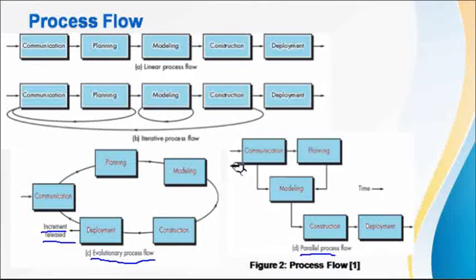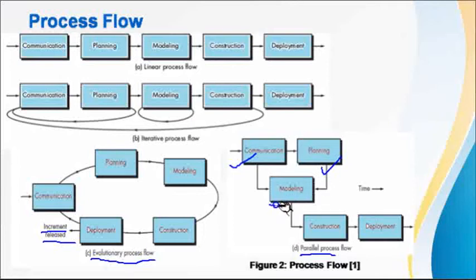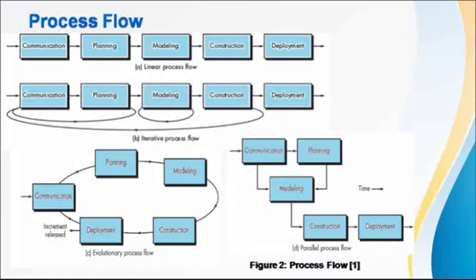The last one is parallel process flow. Here, teams are working simultaneously. The moment communication begins, the planning team is ready to prepare a plan as per the requirements being collected. According to that plan, another team prepares the design document. Activities are carried out simultaneously by different teams working in parallel to get the work done.